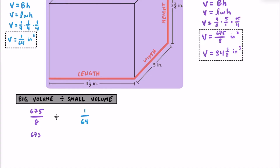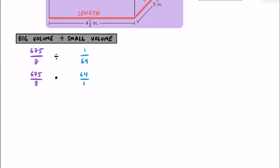When dividing fractions, we rewrite this as a multiplication problem: 675 eighths multiplied by the reciprocal of one sixty-fourth, which is 64 over 1. Notice that the 8 and 64 can cross cancel — dividing both by 8, their greatest common factor — giving us 1 and 8. So in the numerator we have 675 times 8, which equals 5,400, and in the denominator we just get 1. So we can fit 5,400 of these cubes inside of that right rectangular prism.